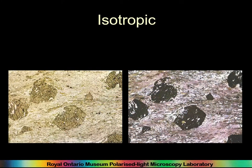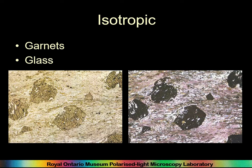Then we come to isotropism, where light is propagated equally in all directions. This is the Garnet group. In plain polarized light you can see through it, but in cross polarized light you can't because the light is blocked. This is also true of glass, which we will talk about more when we look at rocks and anthropogenic materials.